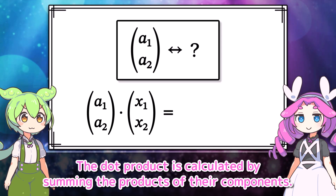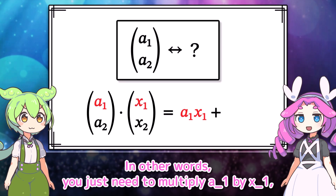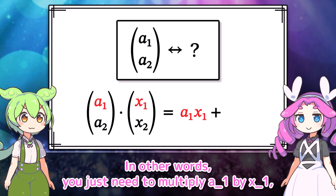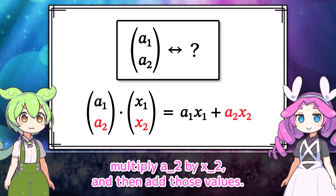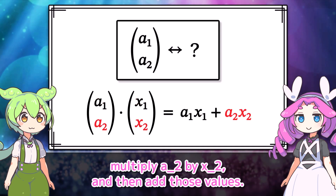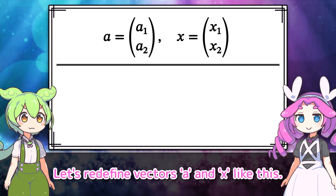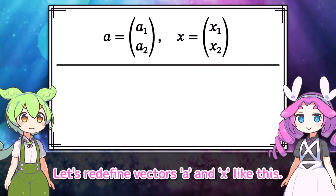The dot product is calculated by summing the products of their components. In other words, you just need to multiply a1 by x1, multiply a2 by x2, and then add those values. Let's redefine vectors a and x like this.